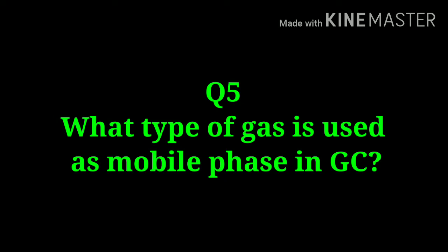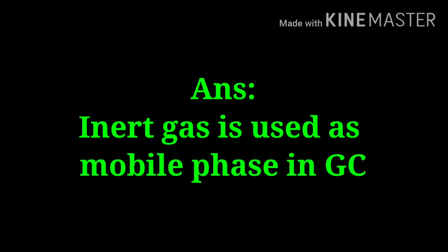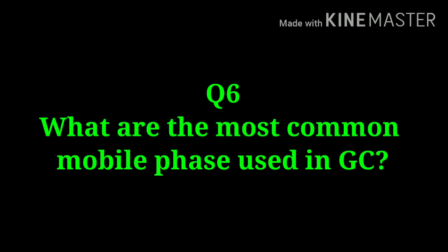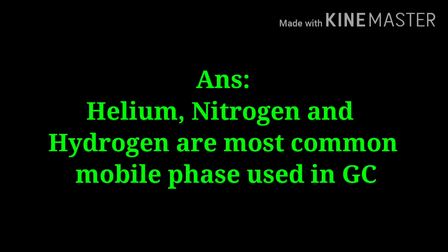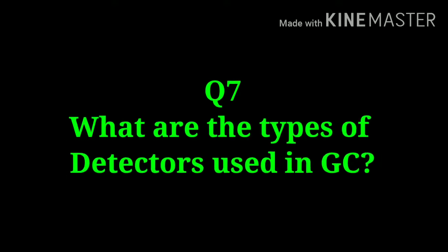What type of gas is used as a mobile phase in gas chromatography? An inert type of gas is used as the mobile phase. What are the most common mobile phases used? Helium, nitrogen, and hydrogen are the most common gases used in gas chromatography.